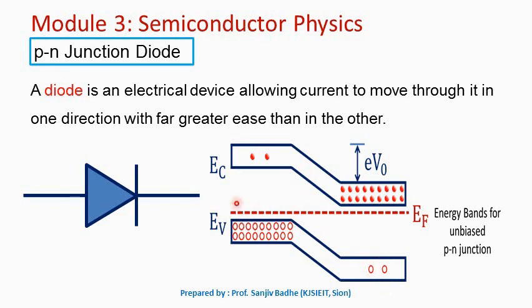Now let us connect this P-N junction in forward bias mode and reverse bias mode and study the V-I characteristics. In forward bias mode, the P side is connected to the positive terminal of the battery and the N side to the negative terminal. In reverse bias mode, the P side is connected to the negative terminal and the N side to the positive terminal. In these two cases we will examine what happens to the energy band diagram and its effect on the characteristics of the P-N junction diode.